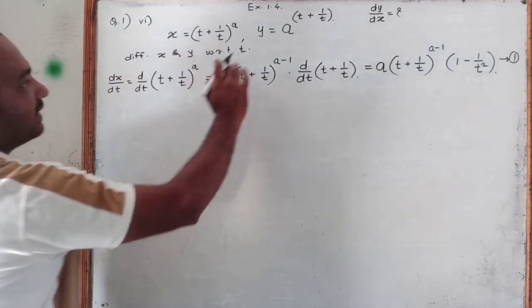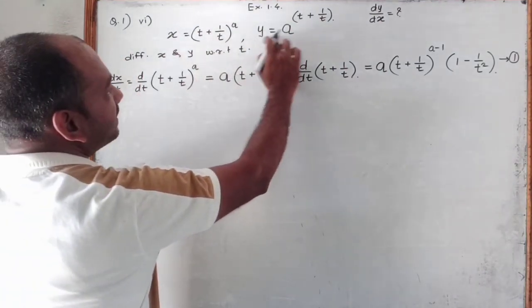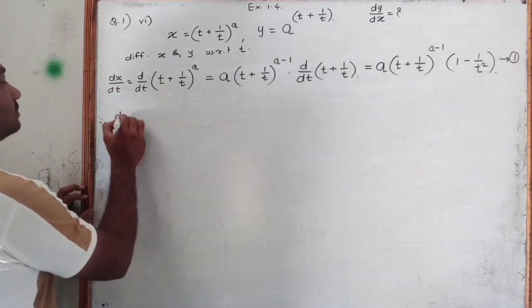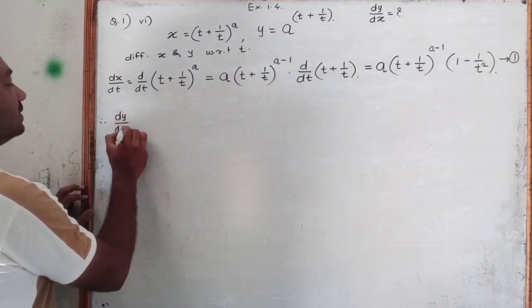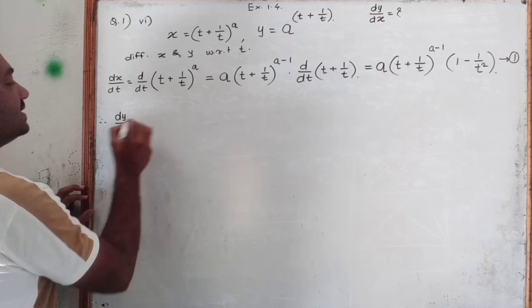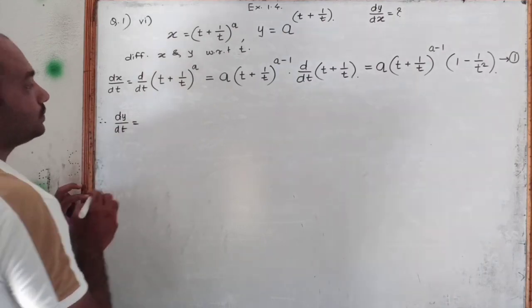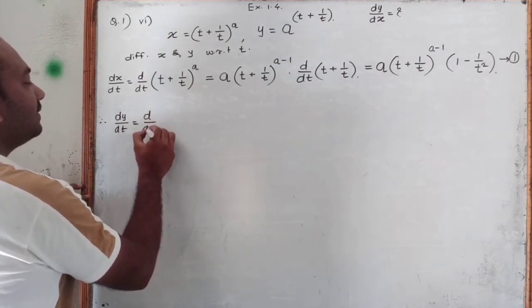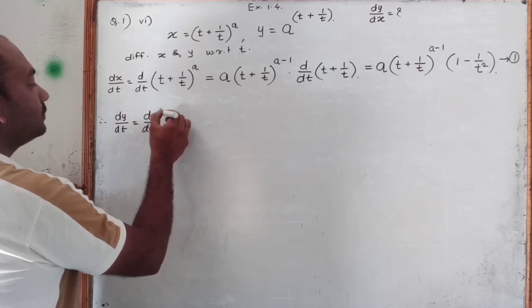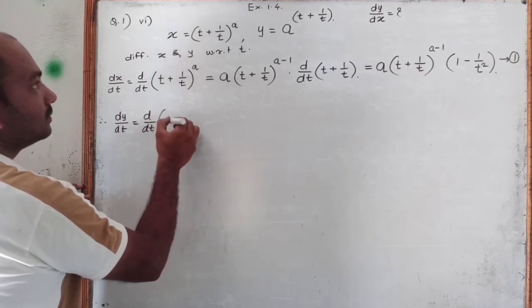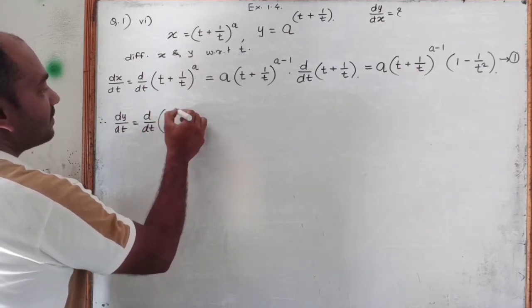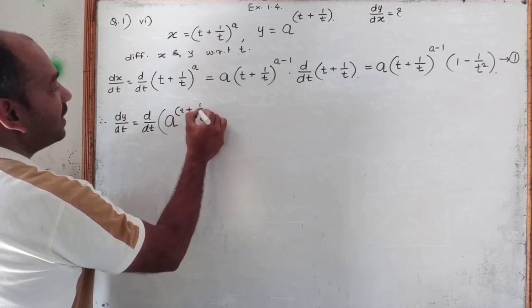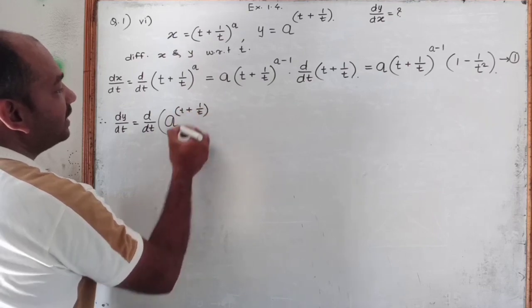Now similarly, differentiate y with respect to t. Therefore, dy upon dt is equal to d by dt of a raised to t plus 1 upon t.